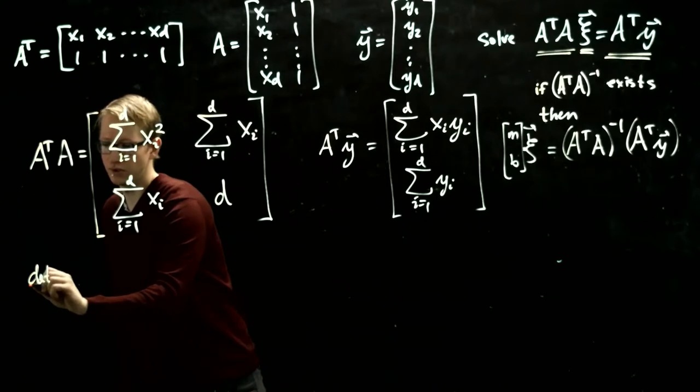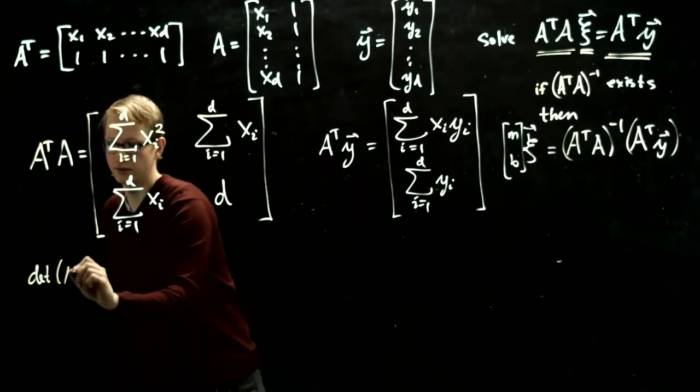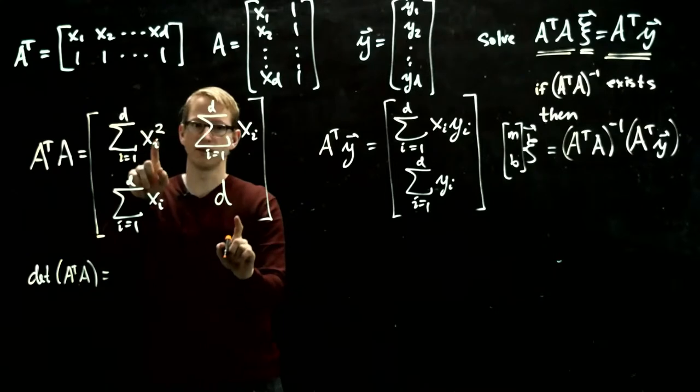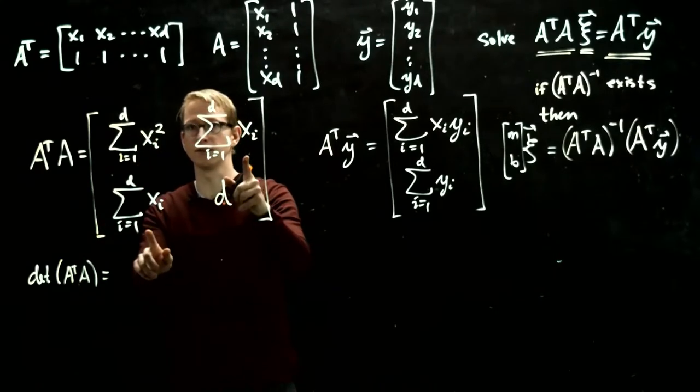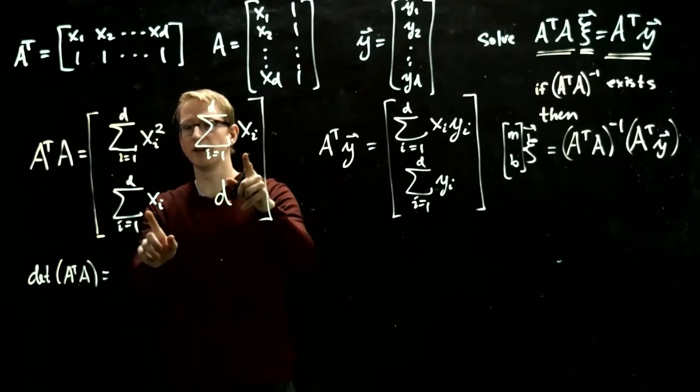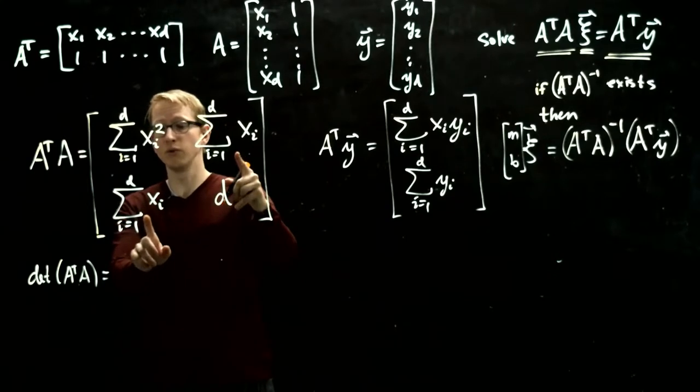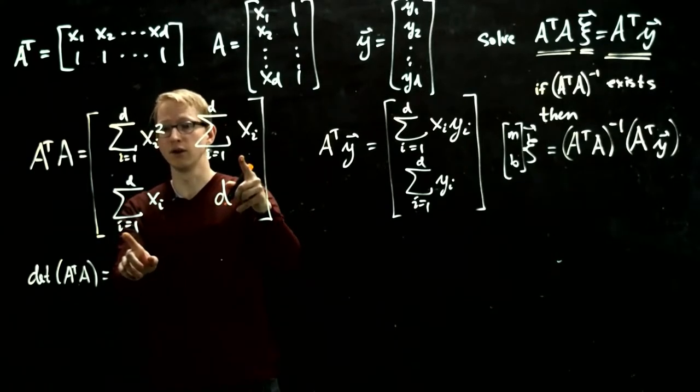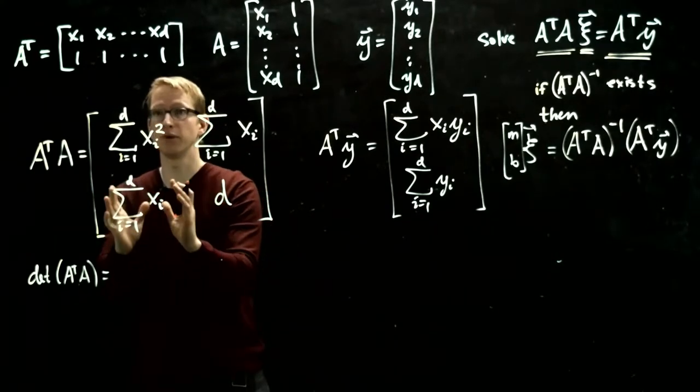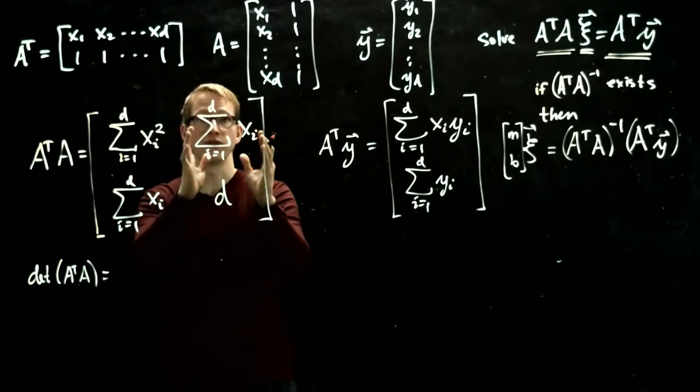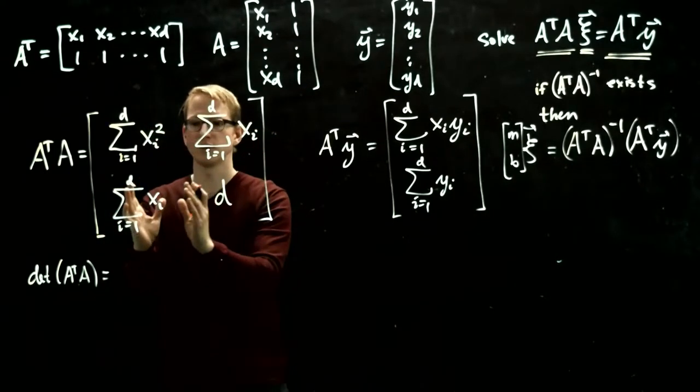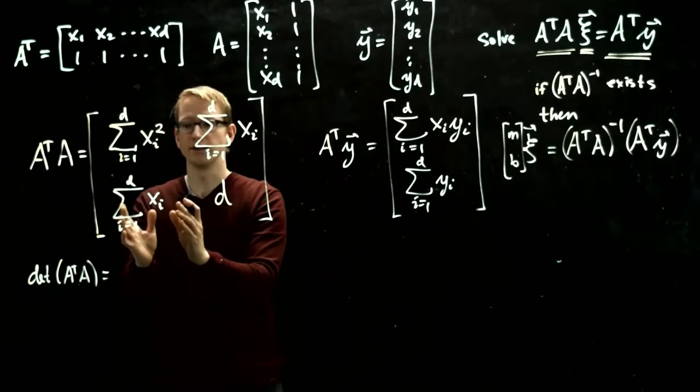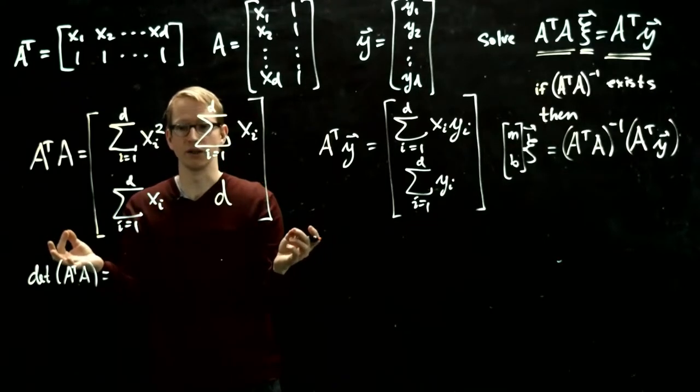So first let's compute the determinant of this matrix. And that's just this times this minus this times this. Now because we're multiplying these two sums, we really have to be careful about the indices. Remember this is a sum of stuff multiplied by a sum of stuff. So we can't just say that this is sum Xi squared. It's actually, there's a lot of foiling going on.